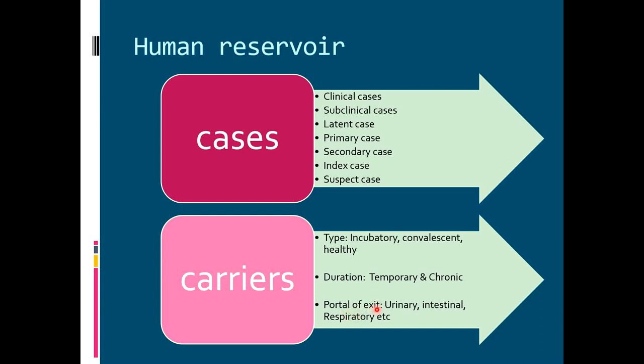Carriers can also be classified according to the portal of exit. The infectious agent may be excreted through the urinary or intestinal route — the best example being typhoid carriers. Urinary carriers in typhoid fever are more dangerous and have more potential to transmit infection than intestinal carriers. In polio, the only portal of exit is the intestinal route. In diseases like COVID-19, diphtheria, and pertussis, the portal of exit is the respiratory route.